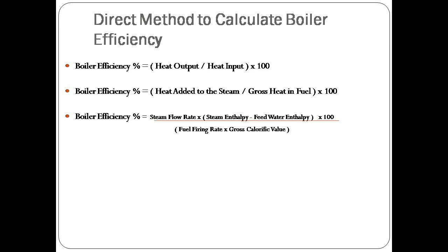As you can see in the third formula, by multiplying steam flow rate with the difference of steam enthalpy and water enthalpy you can calculate heat added to the steam. The gross heat present in fuel or whatever we are supplying to boiler is simply the fuel firing rate multiplied by fuel calorific value.